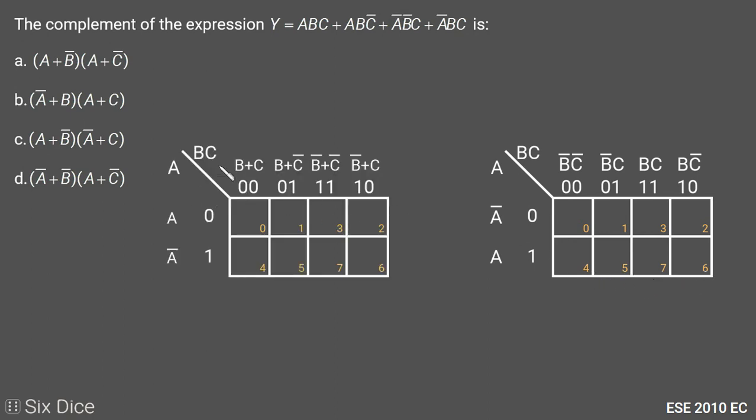We will make another K-map with POS where A is the MSB and C is the LSB. In POS convention, we put normal value of variable when the variable takes value 0 and we put a complement over the variable when the variable takes value 1.